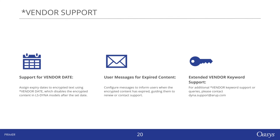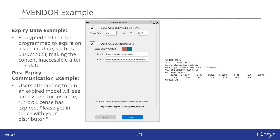Let's look at an example using the vendor feature. In this scenario, the encrypted text is programmed to expire on the 3rd of July 2023. After this date, the content becomes inaccessible. Additionally, a post-expiry message is configured to guide users on the next steps — it reads: 'Please get in touch with your distributor.' This message serves as a direct line of communication for further assistance or to renew access, showcasing the utility of setting expiry dates and customized messages with the vendor option.